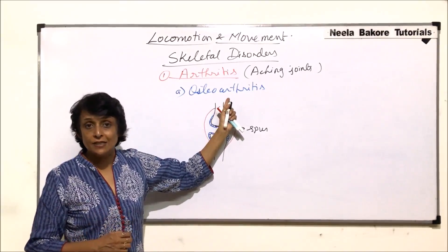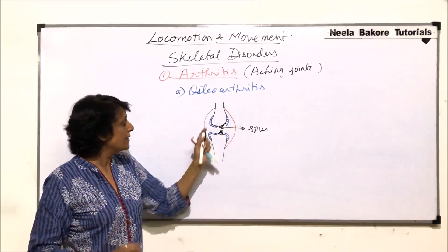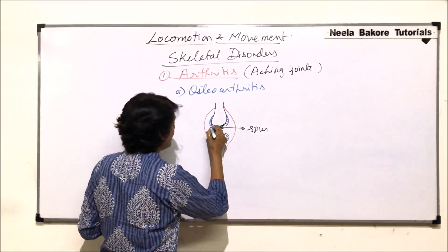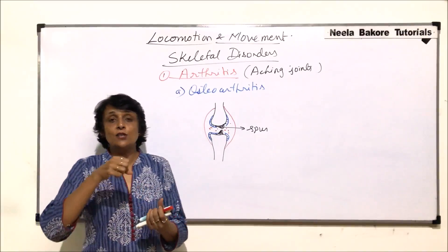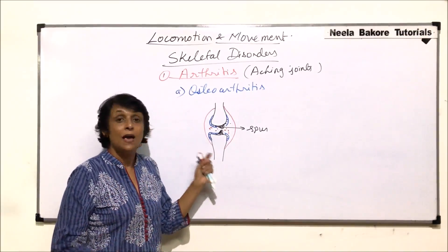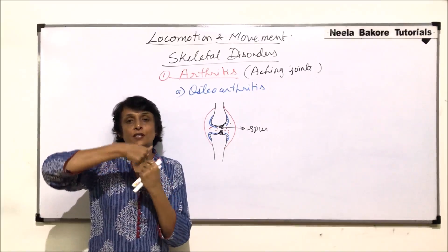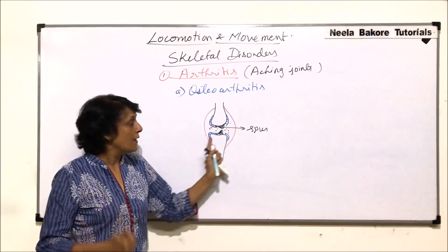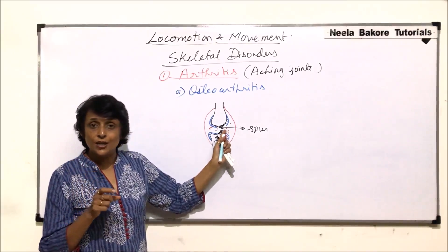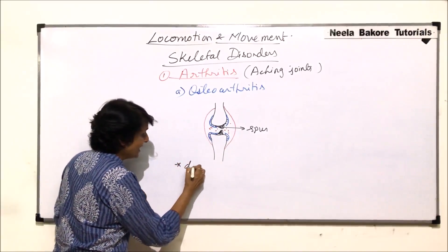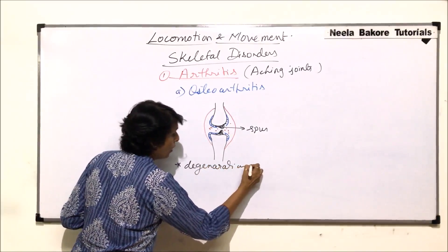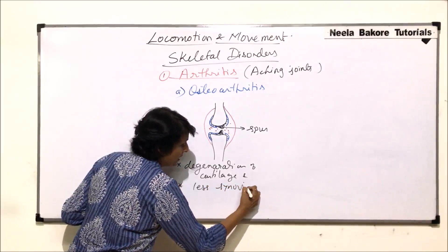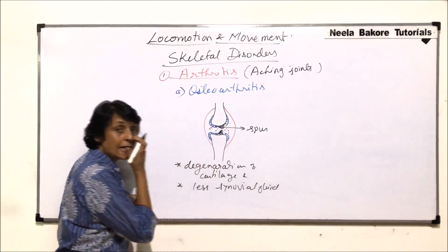This is one reason why it is also termed a degenerative disease, because the cartilage is degenerating. The second reason is less secretion of synovial fluid. The synovial fluid in this space acts as a lubricant, allowing smooth movement of the joint. But if this fluid is less, the bones start touching each other, causing a painful situation. So it could be due to formation of bony spurs where cartilage degenerates, or because the synovial lubricant is less.